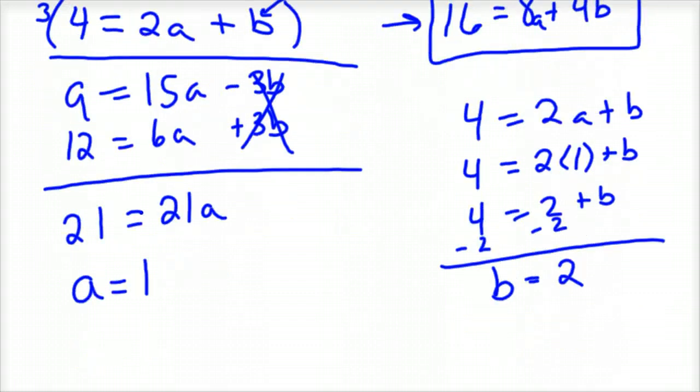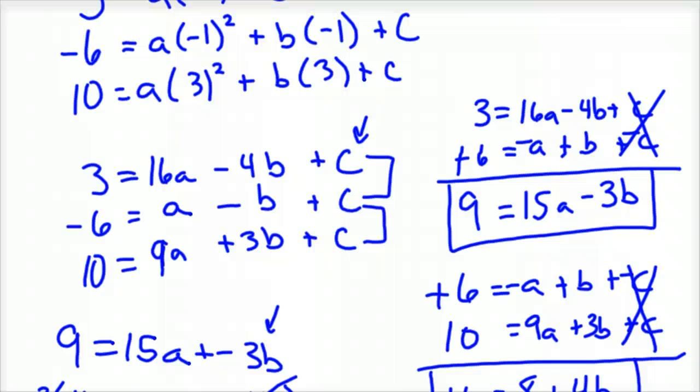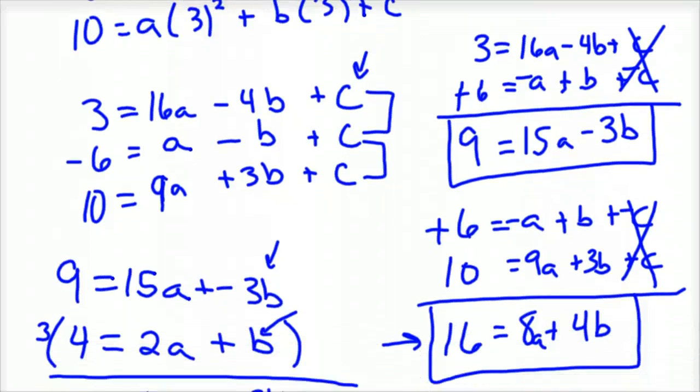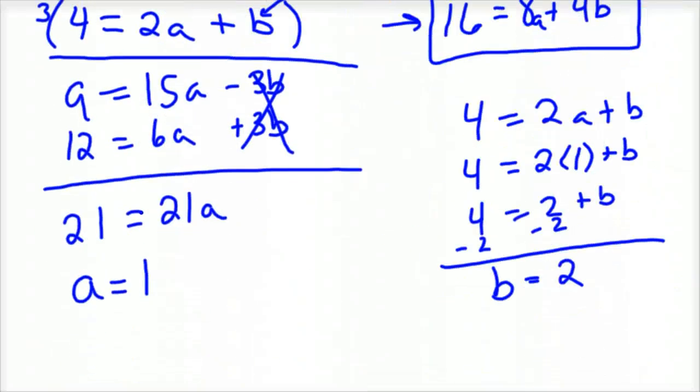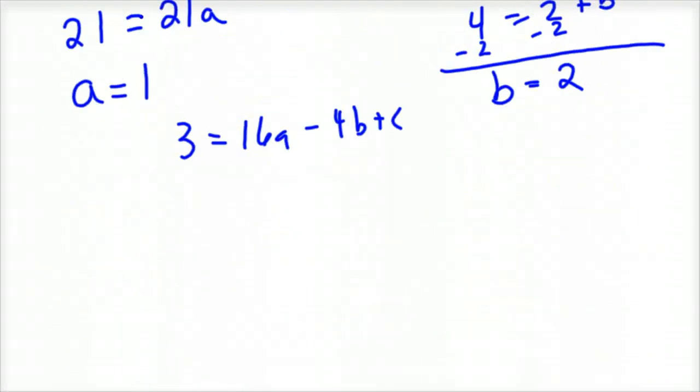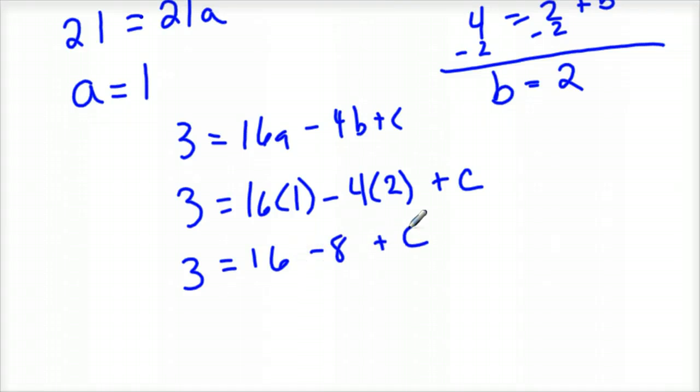Once you have two variables figured out, now you've got to go to one of your very original equations. So I'm going to go to my top one, which is 3, this one here on the top. 3 equals 16a minus 4b plus c. So 3 equals 16a minus 4b plus c. And so what we'd have is 3 equals 16 times 1, minus 4 times 2, plus c. And so 3 equals 16 minus 8 plus c. So 3 equals 8 plus c, minus the 8. And c equals negative 5.